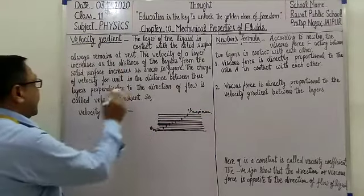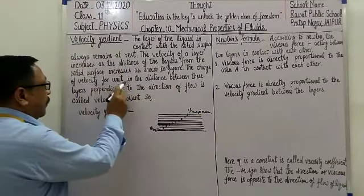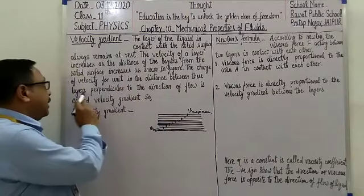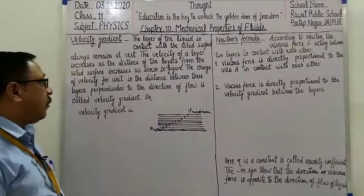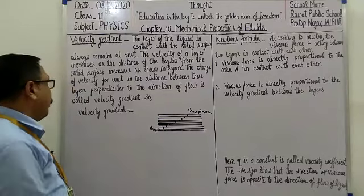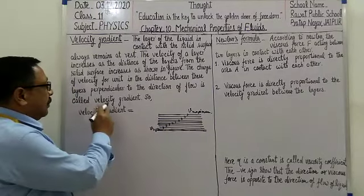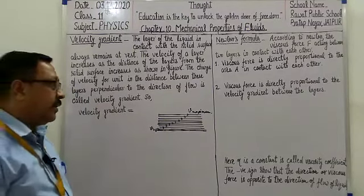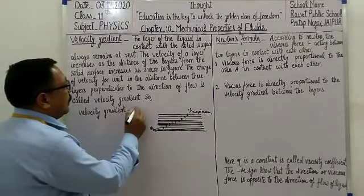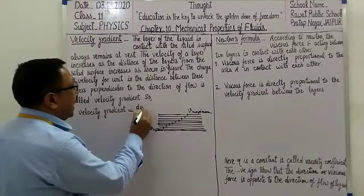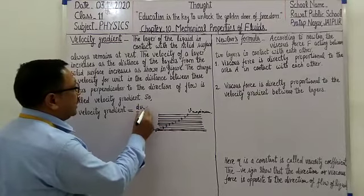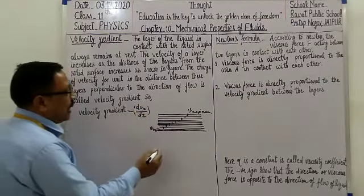The change of velocity for a unit in the distance between these layers perpendicular to the direction of flow is called velocity gradient. So velocity gradient is equals to dvx divided by dz.